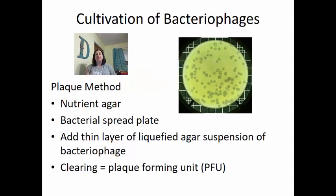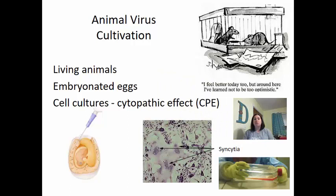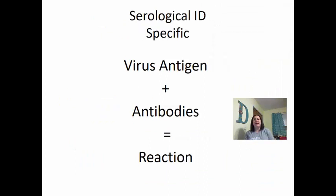This method is pretty easy because it allows us to grow bacteria quickly and get results quickly. But if the virus does not infect bacteria, it's harder to cultivate. For animal virus cultivation, we can put them into living animals to observe signs and symptoms, or inject them into embryonated eggs to see where the viruses prefer to replicate. We can also do cell cultures and look for cytopathic effects, or CPEs — cell deterioration. We can also do a serological ID of viruses, which can very specifically tell us what virus is present.